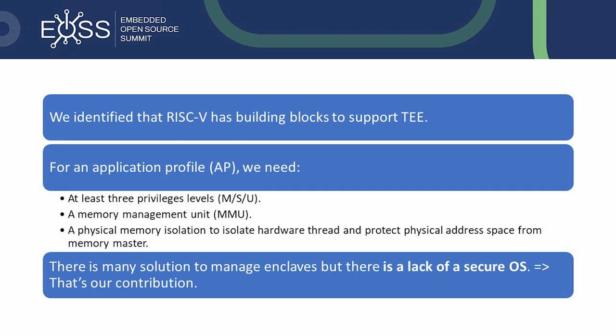The main tool to implement TEE on RISC-V is Physical Memory Protection (PMP), which is part of the privileged specifications for isolating memory regions of the execution environment. The PMP is controlled by a set of Control and Status Registers (CSRs) to enforce physical memory access for S mode and U mode, and can only be configured by M mode. The number of PMP entries varies by hardware implementation — for example, the QEMU virtual machine has 16 entries. Each PMP entry is defined by one or more PMP CSRs depending on the configuration mode, and isolation is done by checking read-write-execute permissions at each memory access.